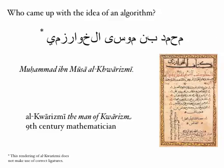So who came up with this idea of an algorithm? The person's name was Muhammad ibn Musa al-Khwarizmi. He was a 9th century mathematician. His name means 'the man of Khwarizm', and the word 'algorithm' is derived from the Latinisation of Khwarizmi.